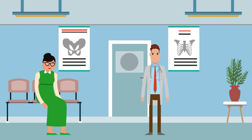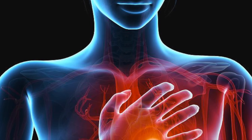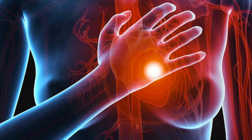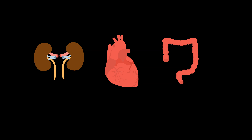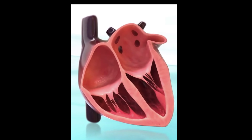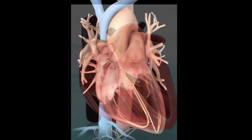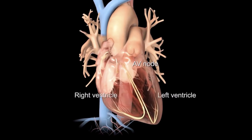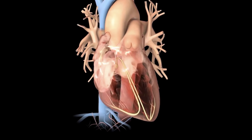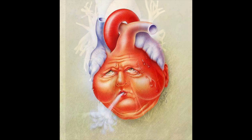People with atrial fibrillation are 5 to 7 times more likely to have a stroke than the general population. Clots can also travel to other parts of the body, like the kidneys, heart, and intestines, causing other damage. Atrial fibrillation can also decrease the heart's pumping ability, as the irregularity makes the heart work less efficiently.